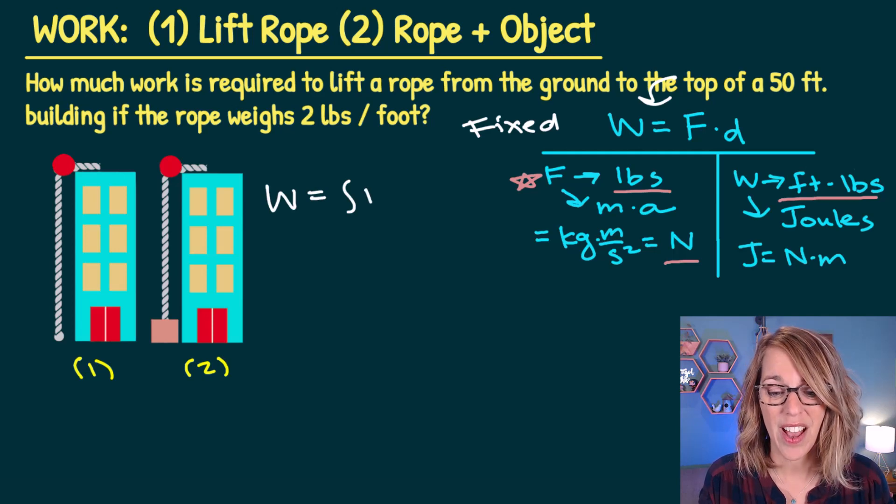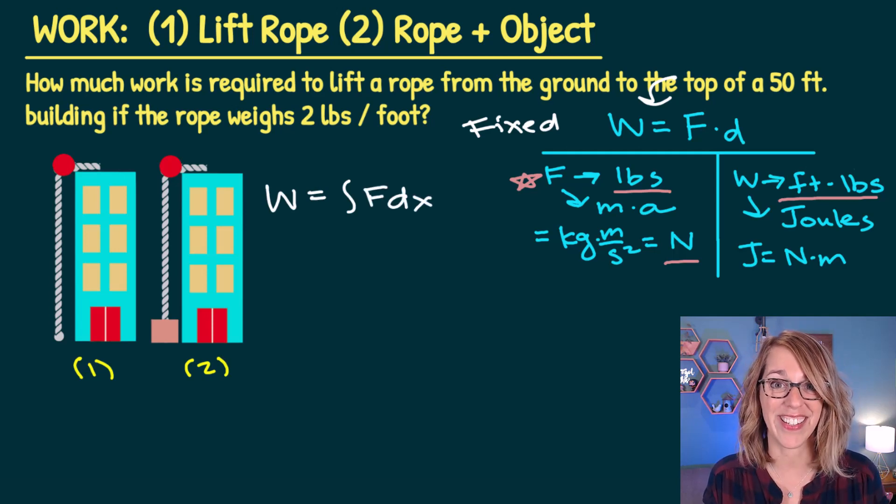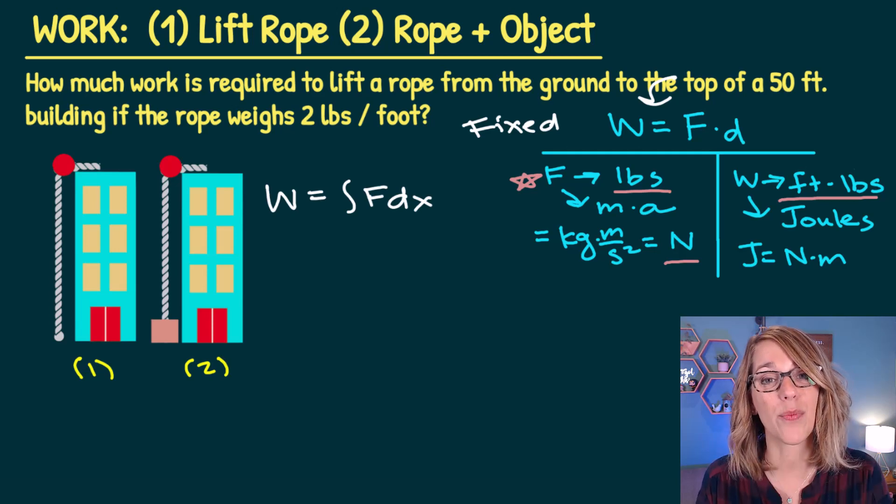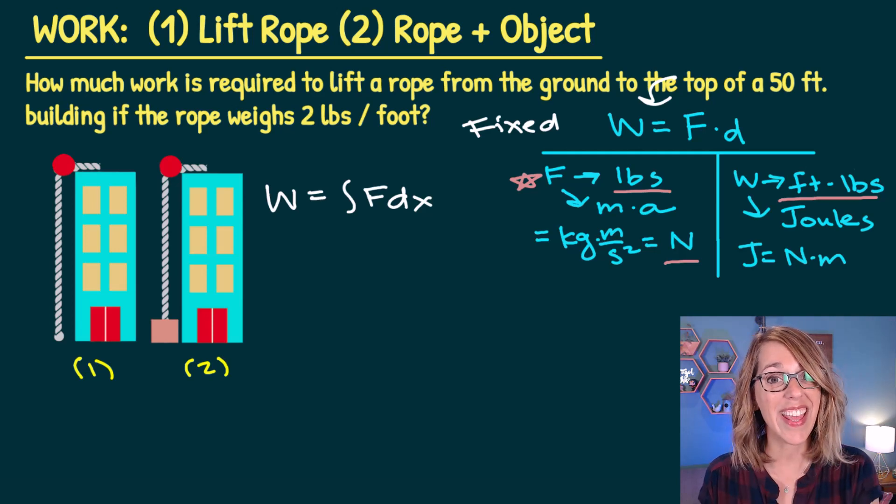So work becomes the integral of force dx, dx being the distance. As I continue to look at this example, I'm going to be focusing on lifting the rope only first, and then we'll get to the rope and weight.